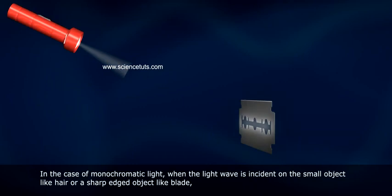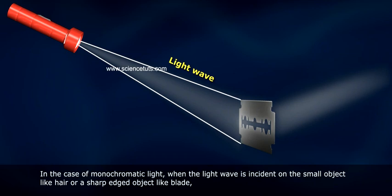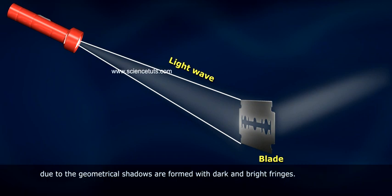In the case of monochromatic light, when the light wave is incident on a small object like hair or a sharp-edged object like a blade, geometrical shadows are formed with dark and bright fringes.